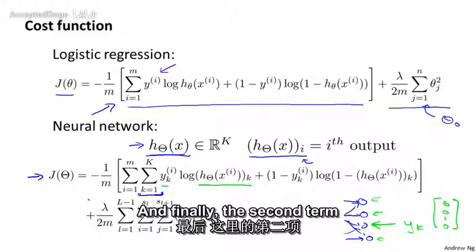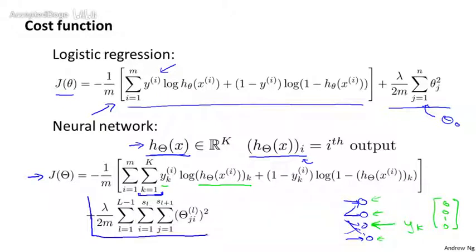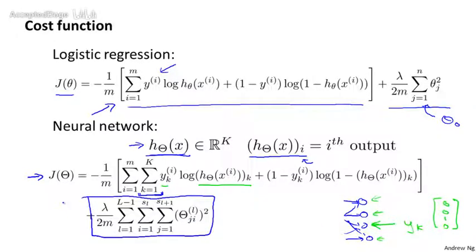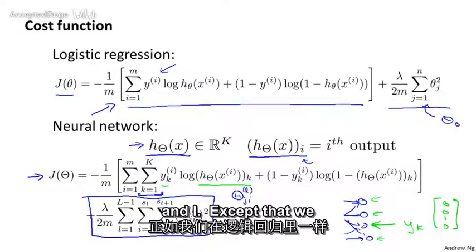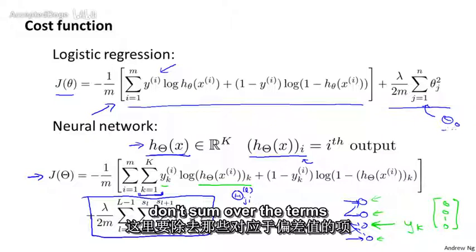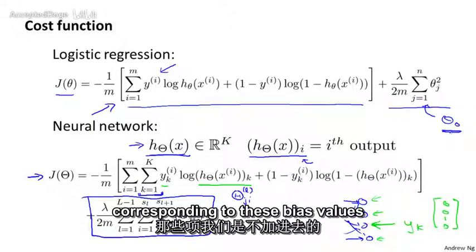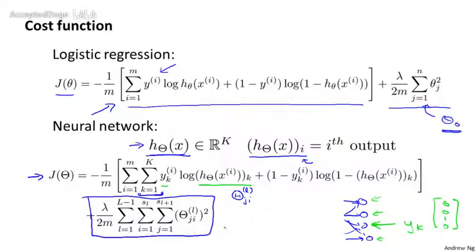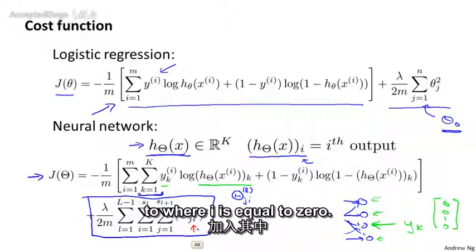And finally, the second term here is the regularization term similar to what we had for logistic regression. This summation term looks really complicated but all it's doing is summing over these terms θ_ji^l for all values of i, j, and l, except that we don't sum over the terms corresponding to these bias values like we had for logistic regression. Concretely, we don't sum over the terms corresponding to where i is equal to zero.